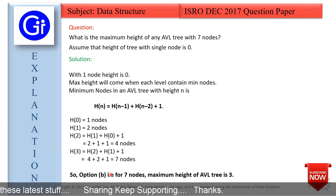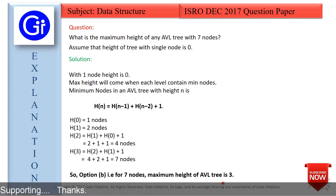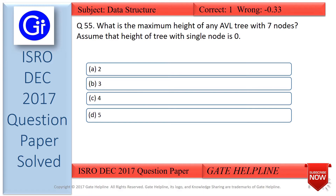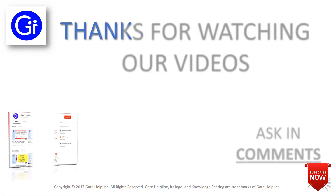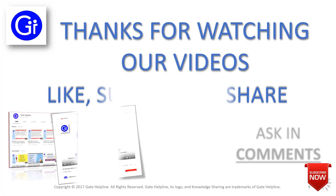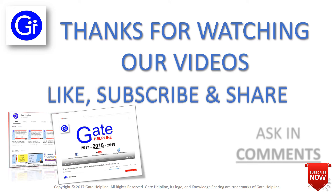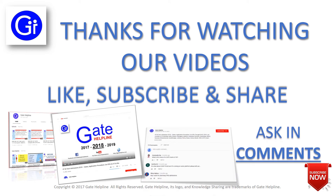So the answer to this question is option B, that is 3 is the maximum height of an AVL tree with 7 nodes. Thanks for watching. Please like, subscribe, and share our videos. If you have any doubt or question please comment below.